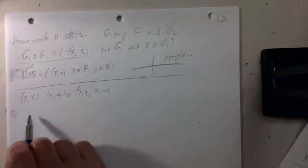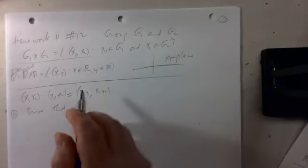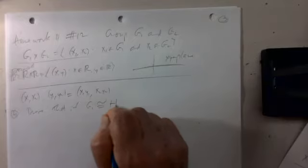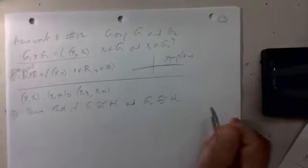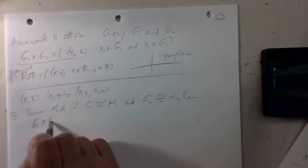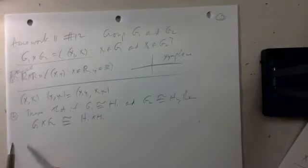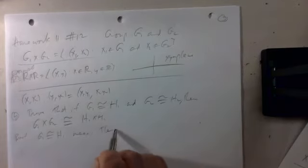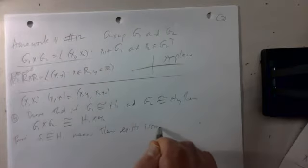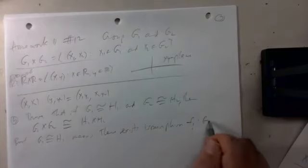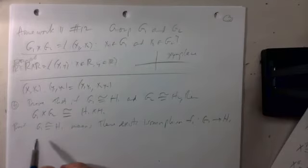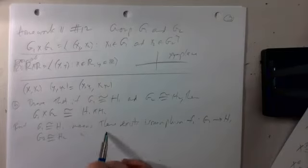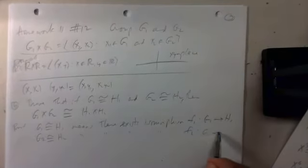In part (a) we want to prove that if G₁ is isomorphic to H₁ and G₂ is isomorphic to H₂, then G₁ × G₂ is isomorphic to H₁ × H₂. If G₁ ≅ H₁ there exists an isomorphism f₁ from G₁ to H₁, and similarly there exists an isomorphism f₂ from G₂ to H₂. There is a natural way to define a function f from G₁ × G₂ to H₁ × H₂.